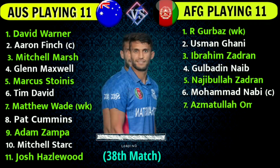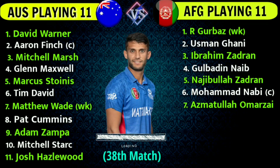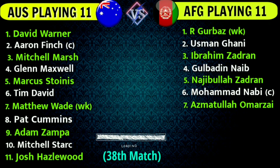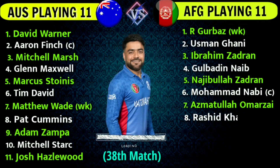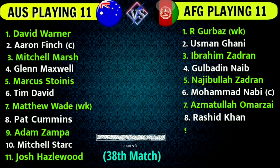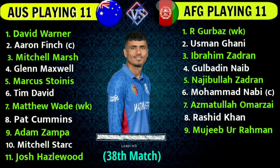Number 7: Asmatullah Omarzai, All-Rounder. Number 8: Rashid Khan, Right Handed Spin Bowler. Number 9: Mujeeb Ur Rahman, Right Handed Spin Bowler.